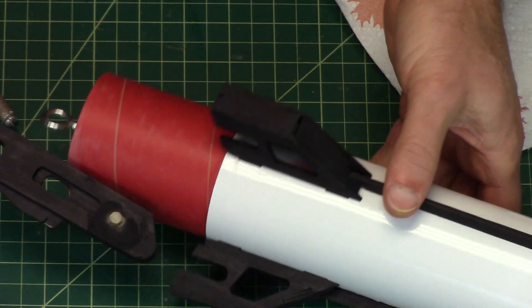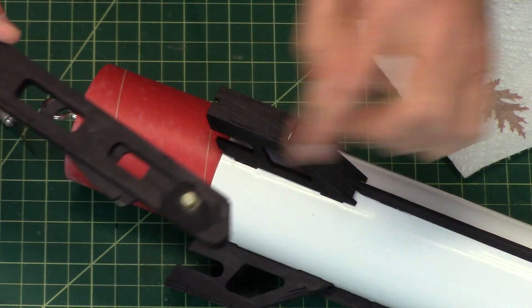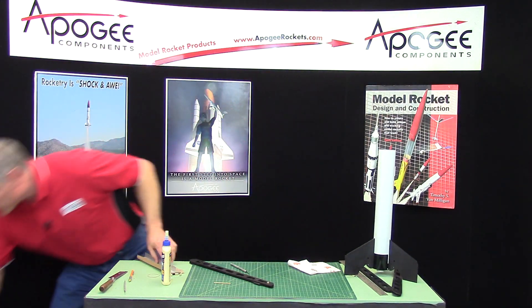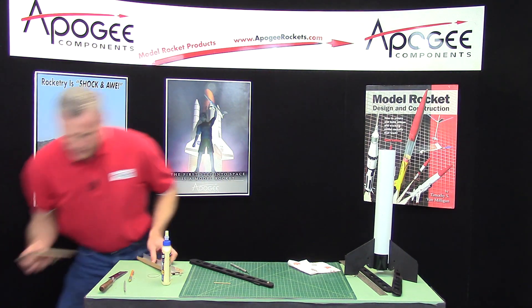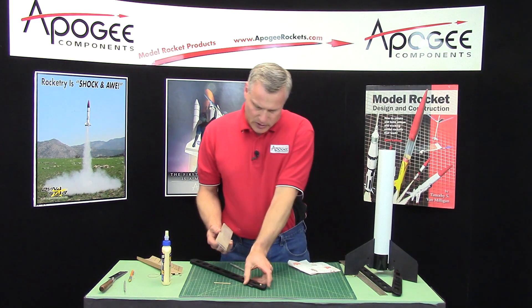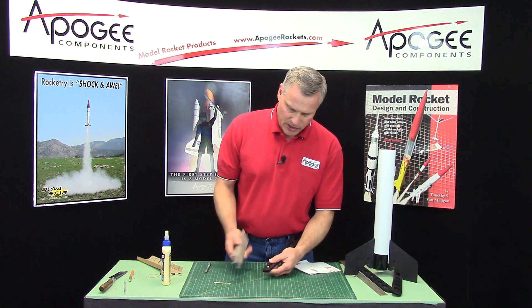But if you want to make it look a little bit nicer, you can sand it. Now we get my sandpaper - this is some hundred grit sandpaper. That way I can sand it down, it'll go a little faster.